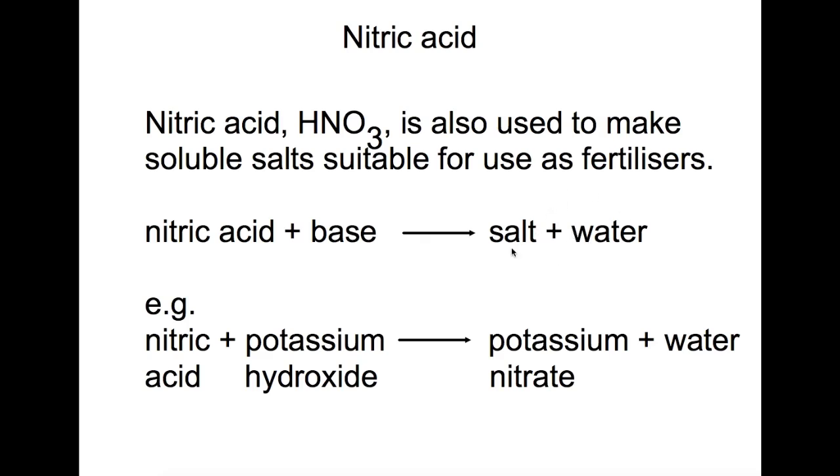If you were to carry out this reaction, you would do a titration between nitric acid and potassium hydroxide to find the volumes required of each using an indicator. You would then repeat this titration without an indicator to be able to produce a potassium nitrate solution. You would then evaporate off the water to leave behind potassium nitrate solid as salt.